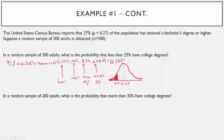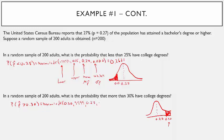Next question: in a random sample of 200 adults, what is the probability that more than 30% have a college degree? That's the probability that p-hat is greater than 0.30. Sketch the curve centered at 0.27; we want greater than 0.30, so it's a right-tail problem. Using normal CDF, the lower is 0.30 and the upper is 9999, mean 0.27, standard deviation 0.0314.